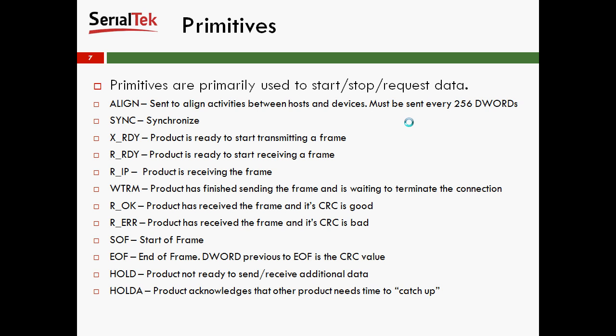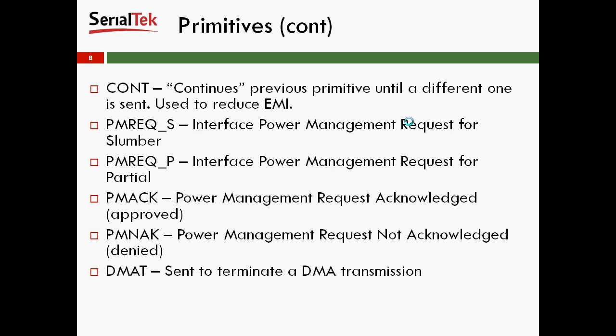Hold means the product is not ready to send or receive additional data. Hold A is when the product acknowledges that the other product needs time to catch up. CONT essentially means continue — it continues the previous primitive until a different one is sent, which is also used to reduce EMI. For power management, we have PMREQ-S, which is an interface power management request for slumber; PMREQ-P for partial; PMACK for acknowledging the power management request; and PMNACK for denying the power management request.